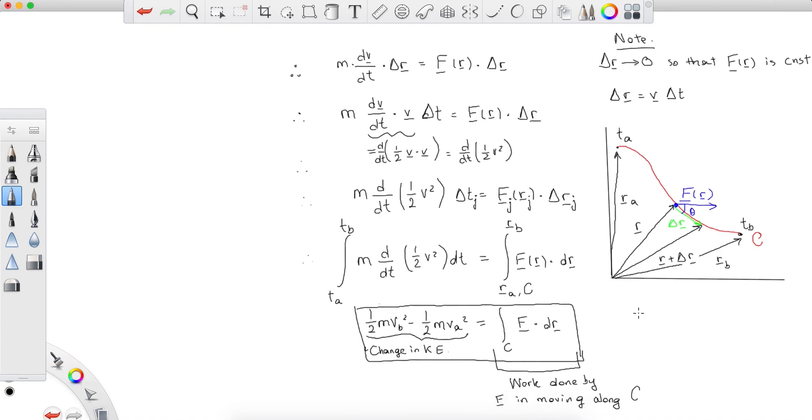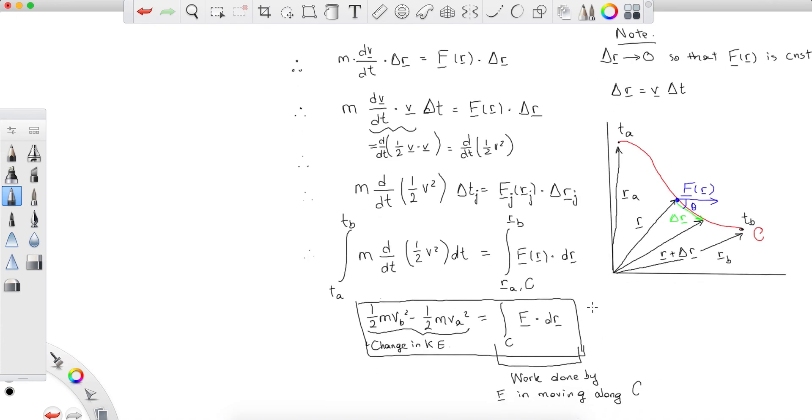And we're going to take a couple of videos to explain what this really means because it is very ambiguous. Taking the integral along a path of a dot product. What? So in the next videos we'll look at what work is in three dimensions and give a couple examples. So this is the work energy theorem in its generality.